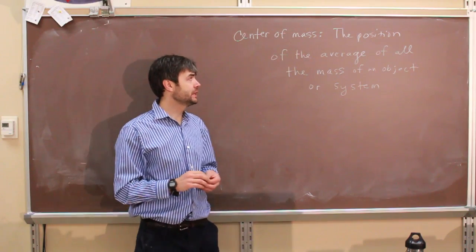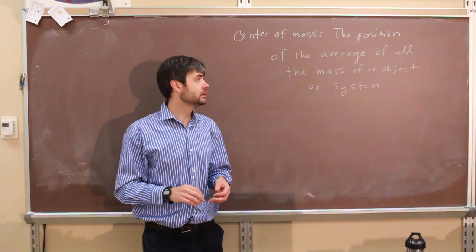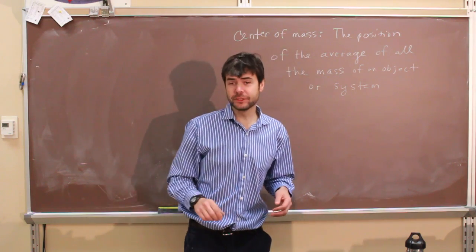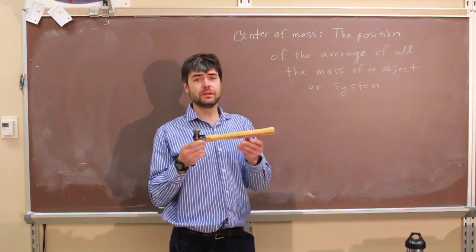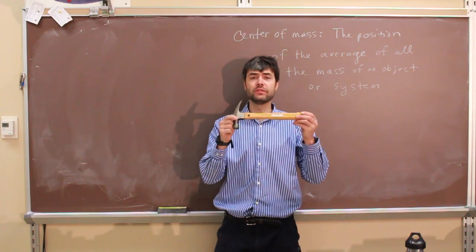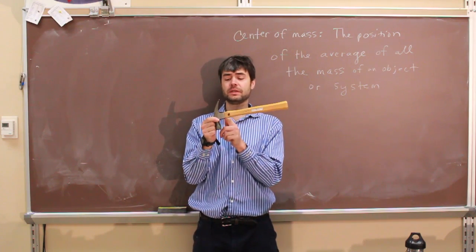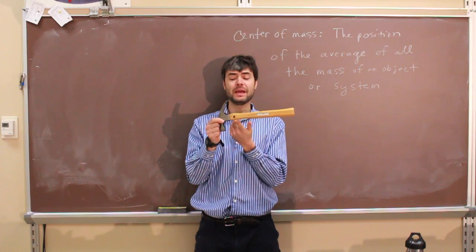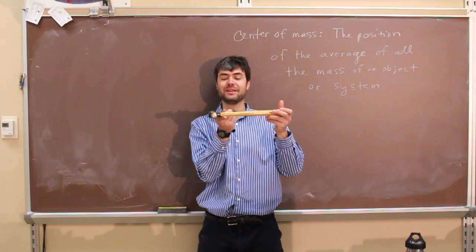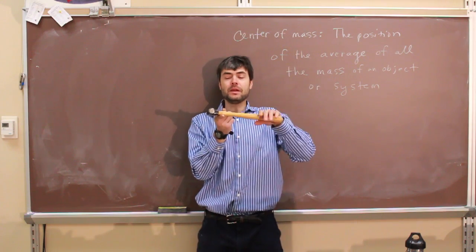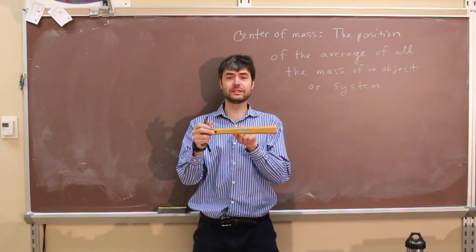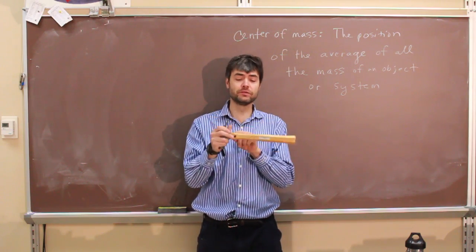Mass is the position of the average of all the mass of an object or system. If we look at an object such as a hammer, this end has more mass than the handle, so the center of mass tends to be closer to the head. Its balance point is about there. So if I were to throw this object, it won't rotate about its center — it will rotate about its center of mass.